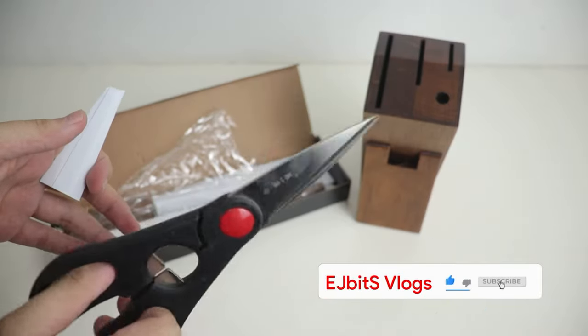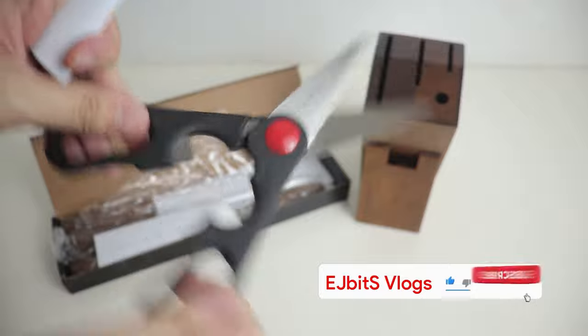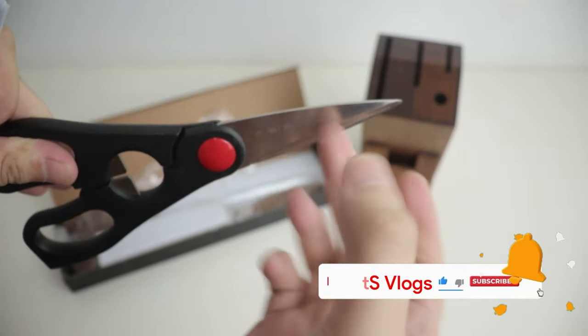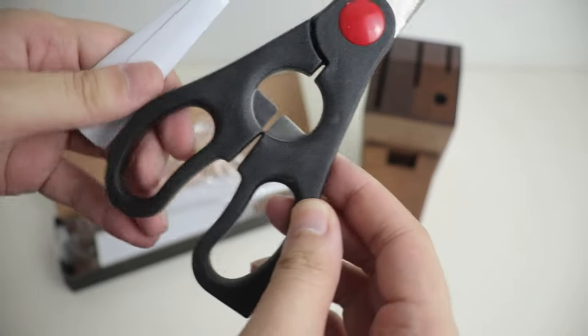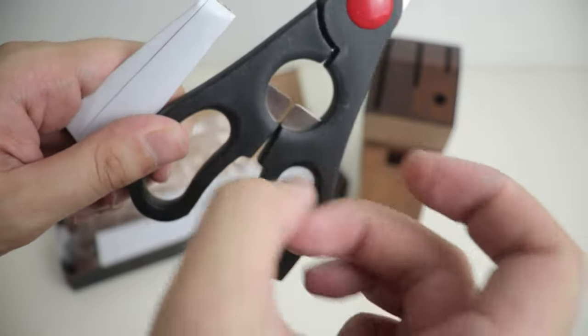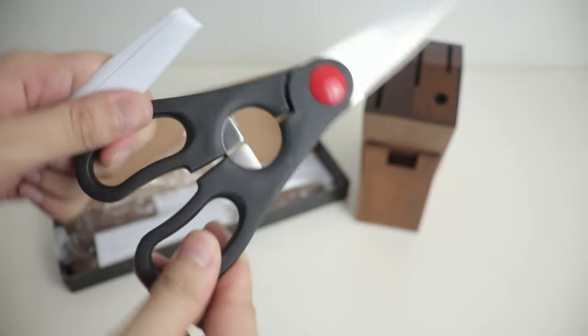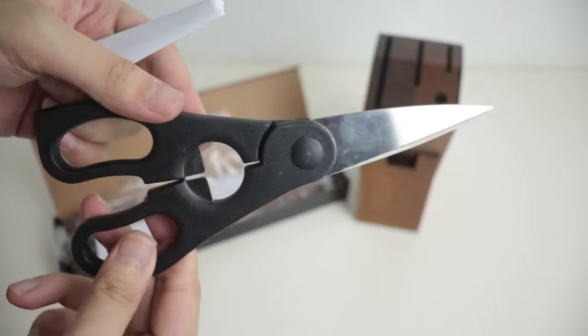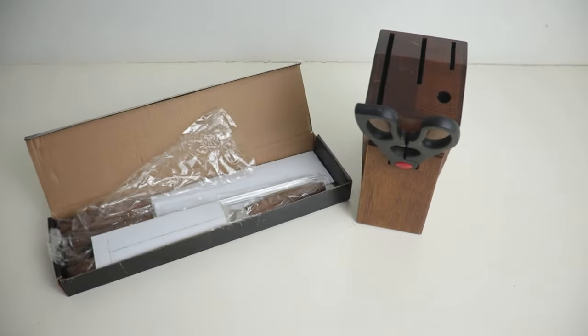Here we have our kitchen scissors, very good for slicing through the bones of chicken, if you want to debone your chicken or do something like that. We can see there's a bottle opener in the middle, stainless steel construction, and plastic body to hold the scissors. Very nice to use.